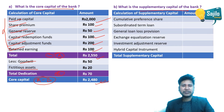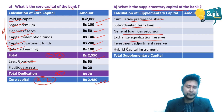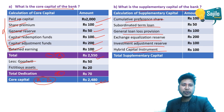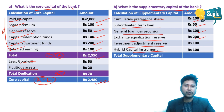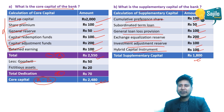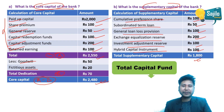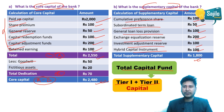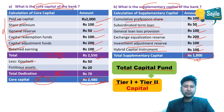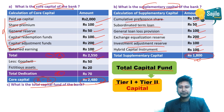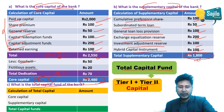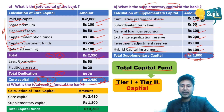For supplementary capital, we include: cumulative preference shares of 150; sub-ordinated term loan of 100; general loan loss reserve provision of 200; exchange equalization reserve of 100; investment adjustment reserve of 100; and hybrid capital instruments. The total supplementary capital (Tier 2) amounts to 1,800. Adding Tier 1 core capital of 2,480 and Tier 2 of 1,800 gives the total capital fund.